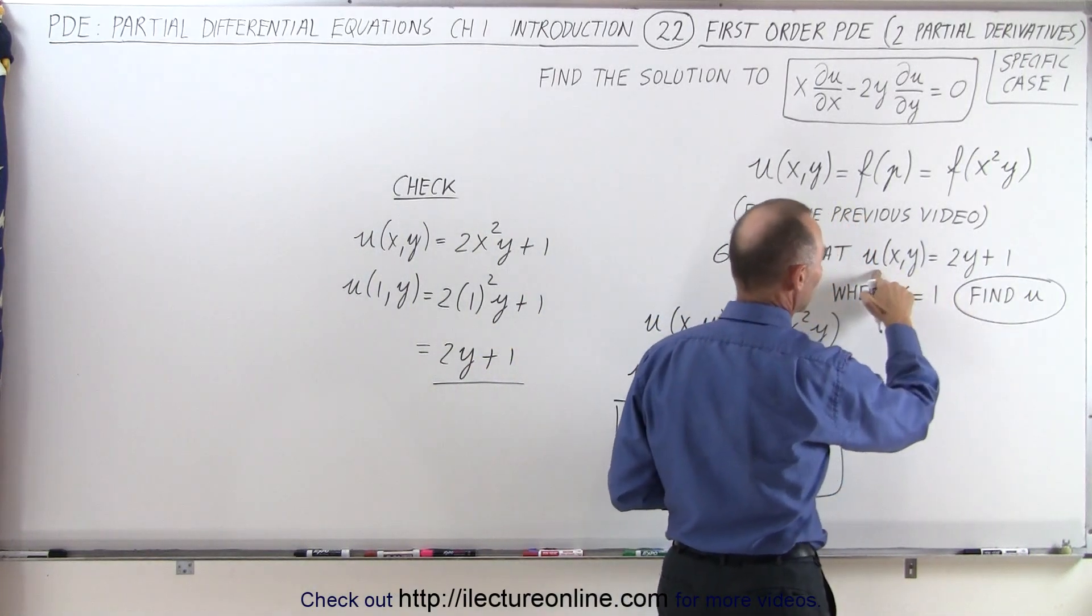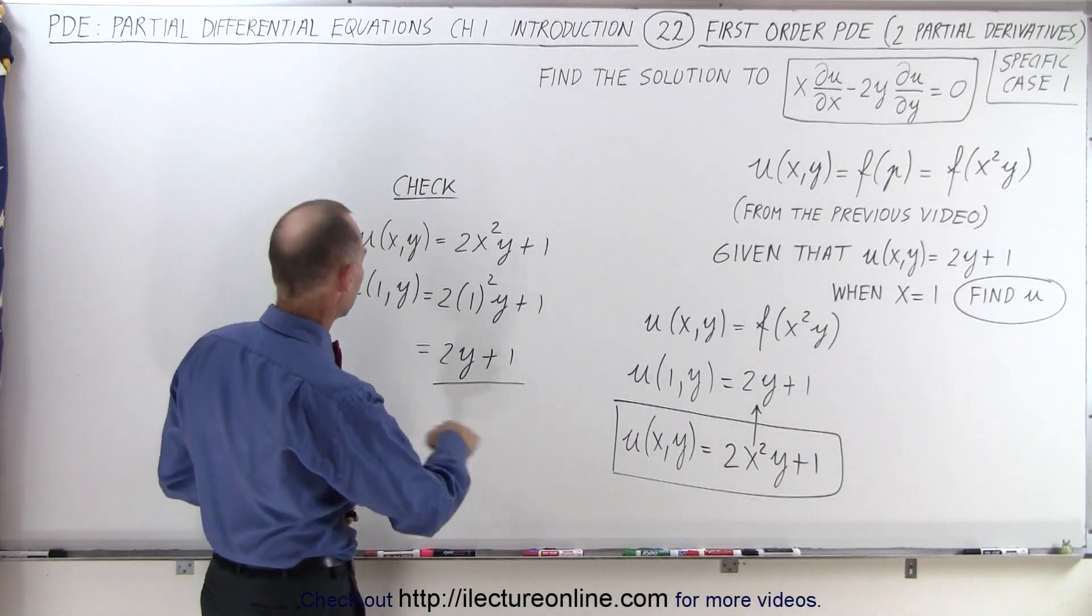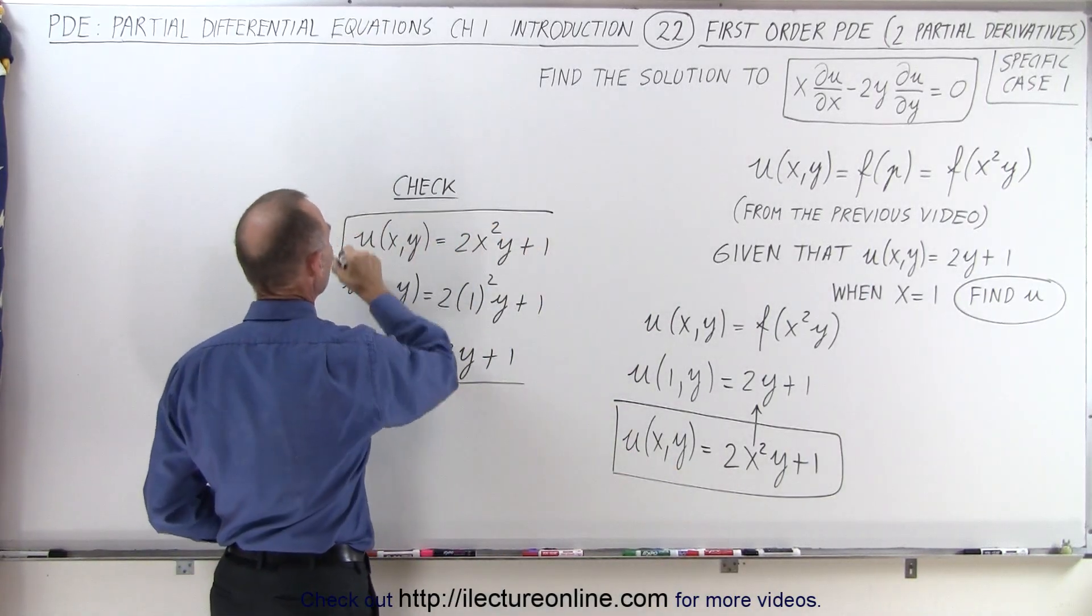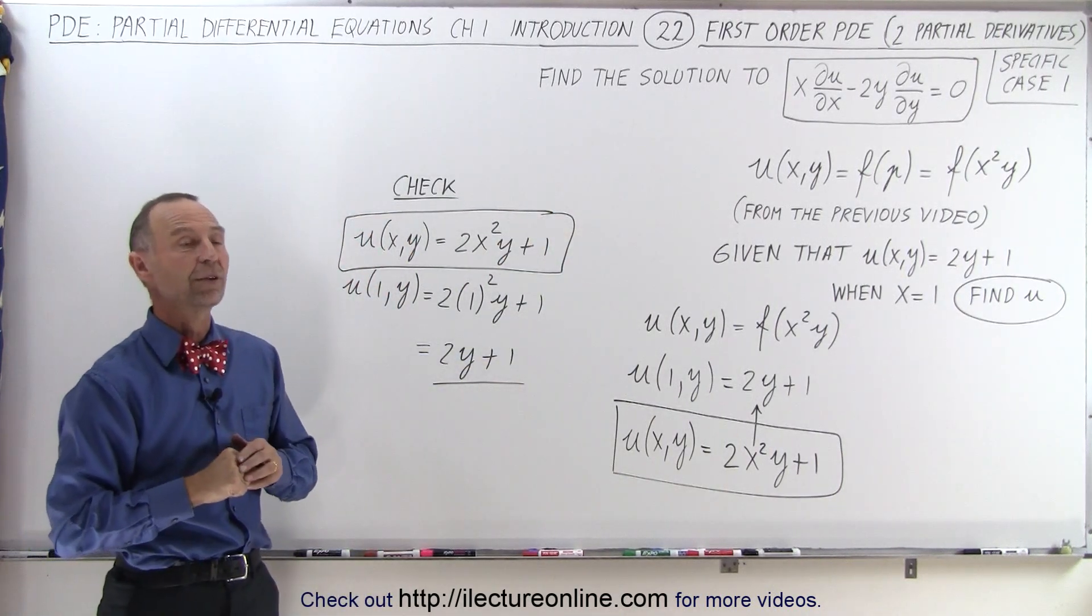When x equals 1, the requirement was that u was equal to 2y plus 1. So it meets both requirements. So this here, we have a valid solution, meaning all the requirements for that partial differential equation.